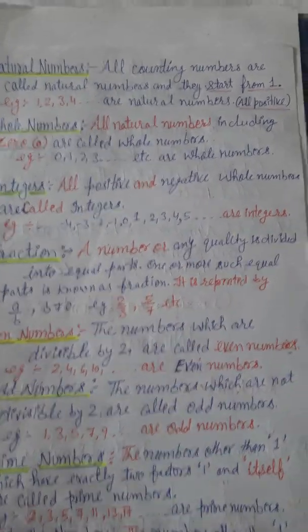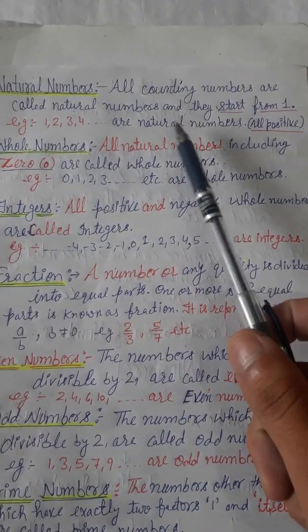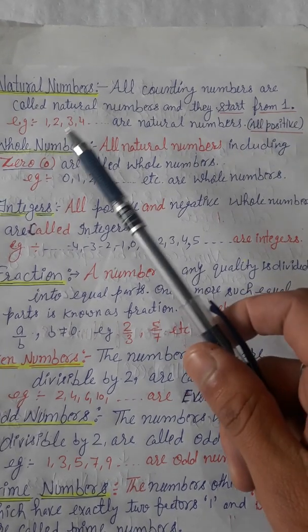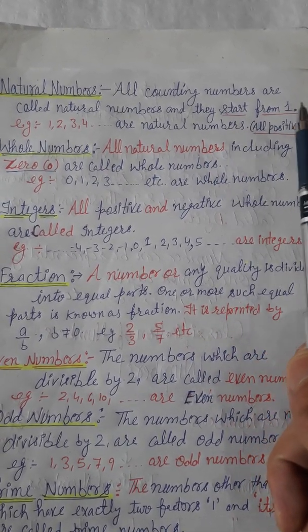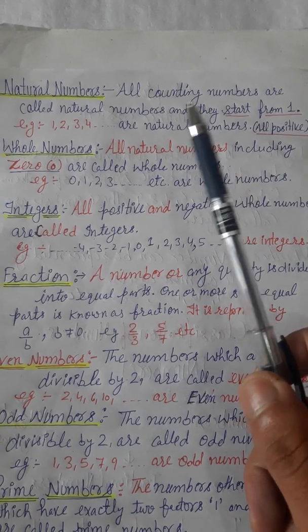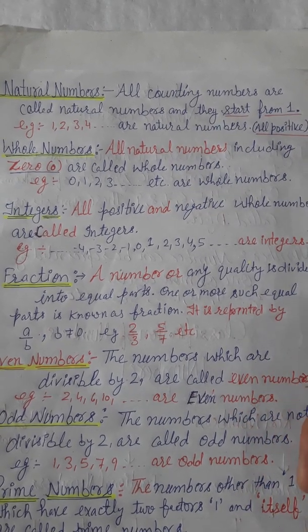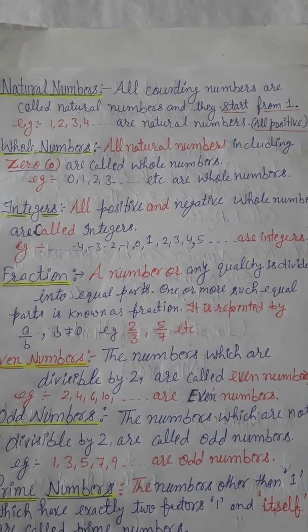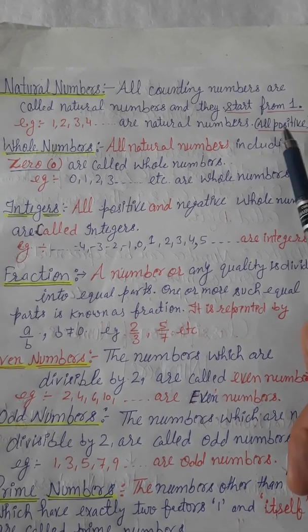Let's start with natural numbers. All counting numbers are called natural numbers. They start from 1, and examples are 1, 2, 3, 4, and so on. All natural numbers are positive.